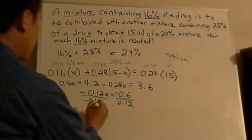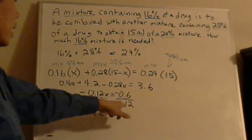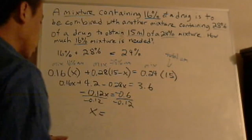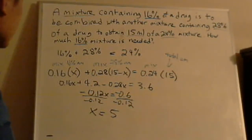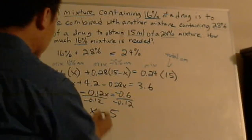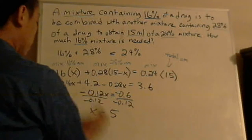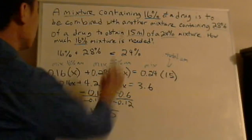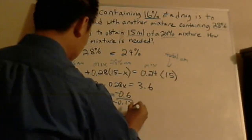So we get x now equals to, what's negative 0.6 over negative 0.12? Well, that's just 5. So the answer right now is we have 5. And 5 refers to the 16% amount of mixture. And it's asking how much 16% mixture is needed? Well, it's 5 milliliters.